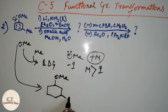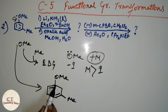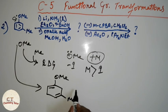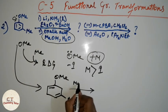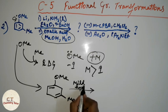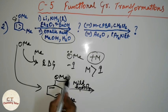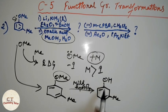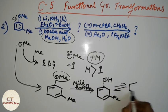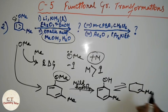Since both OMe and Me are electron-donating groups, after Birch reduction the double bond will be attached to those groups. In the second step, oxalic acid, methanol, and H2O are given — this is mild hydrolysis. Mild hydrolysis of the enol ether gives an OH. Whenever you see OH and a double bond together, tautomerization occurs and you get a ketone group.